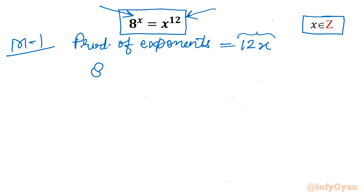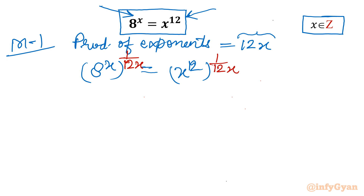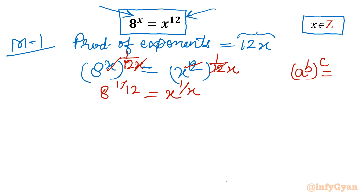I will raise both sides to the power 1/(12x). Using the property (a^b)^c = a^(b·c), the x on the left and 12 on the right cancel out, giving 8^(1/12) = x^(1/12). Now let me write this in base form.